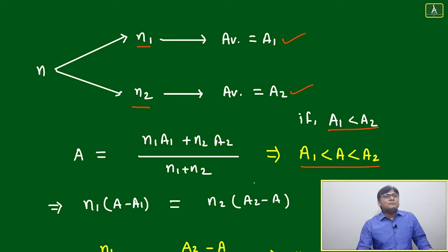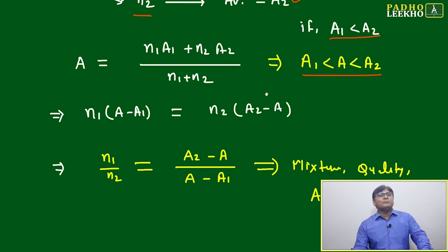The average equals (n1·A1 + n2·A2)/(n1 + n2). If you do the cross multiplication, n1(A - A1) = n2(A2 - A), which means the ratio n1/n2 equals (A2 - A)/(A - A1).